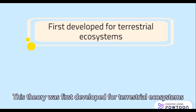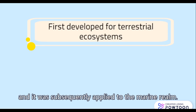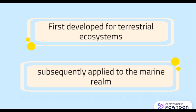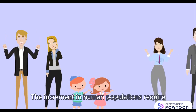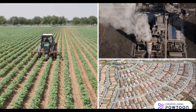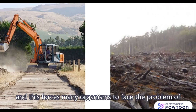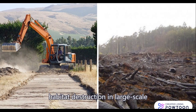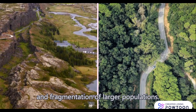This theory was first developed for terrestrial ecosystems, and it was subsequently applied to the marine realm. The increment in human populations requires larger areas for land-use activities, and this forces many organisms to face the problem of habitat destruction on a large scale and fragmentation of larger populations.